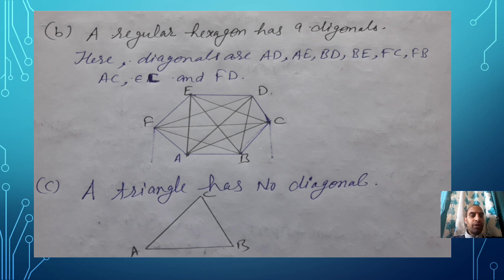In case of regular hexagon you will get nine diagonals. But in case of a triangle, my dear students, there is no diagonal. You can see here we have no choice. A and C are already joined, B and C are already joined, C and B is also already joined. There is no option where we can join any other line. So in case of a triangle there is no diagonal. I hope my students you are able to understand this concept of diagonals. Thank you so much.